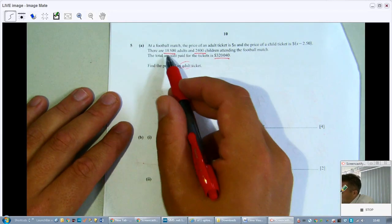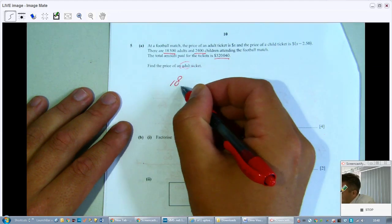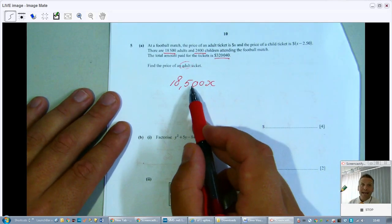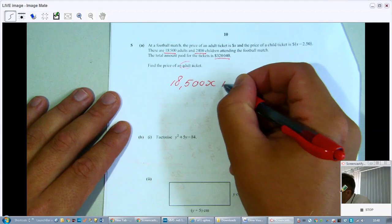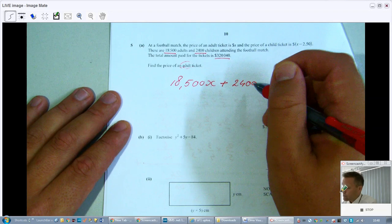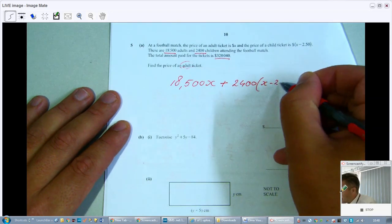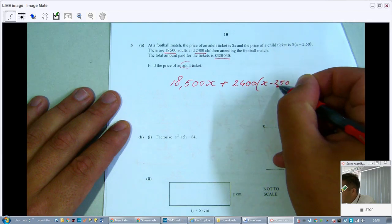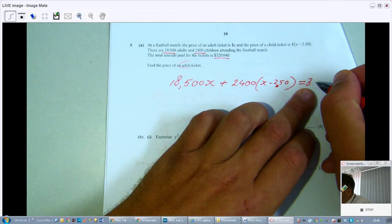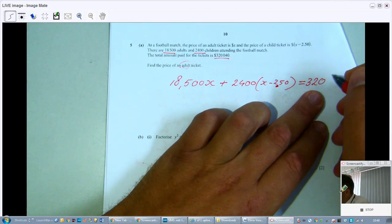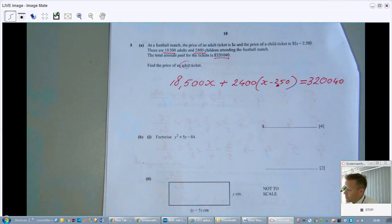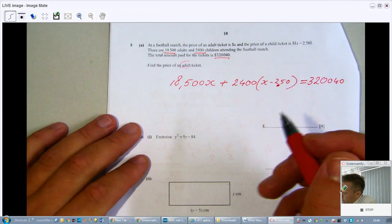So if I pay 18,500 times X, because they all pay this X amount, all 18,500 people, and if I add there the price that all the children are paying, all 2,400 of them are paying this amount, that's 250, so that's a dot, and that equals the total of money I have in my pocket after selling all those tickets, 320,040. So that's the equation I construct and which I now have to carefully solve.